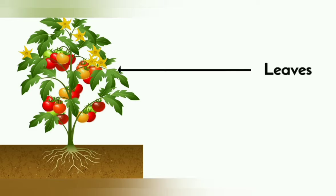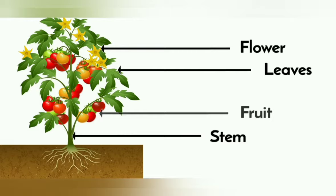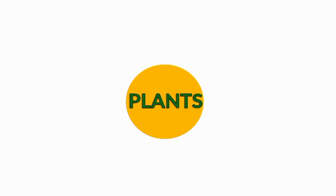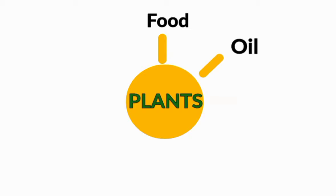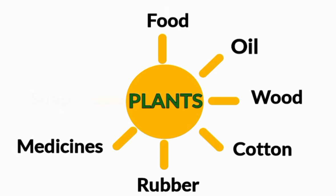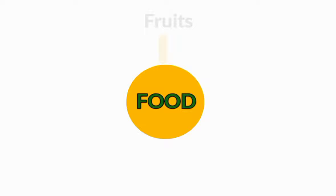Different parts of the plants are used to obtain things that are useful to us such as food, oil, wood, cotton, rubber, medicines, soap, paper, etc.